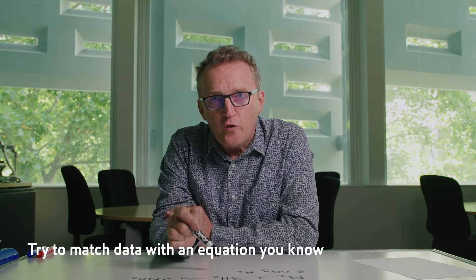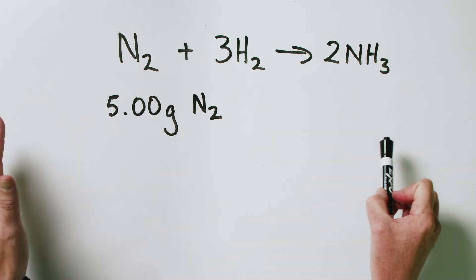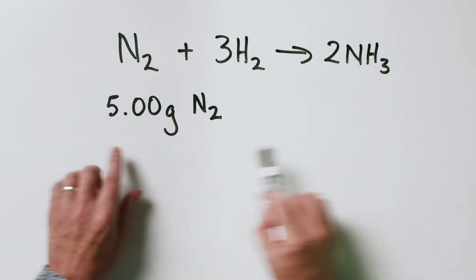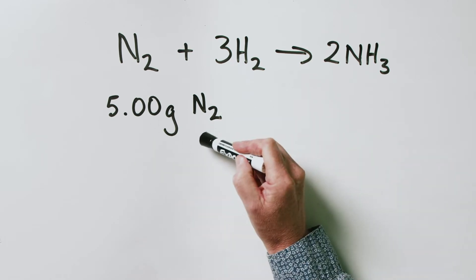Being a stoichiometry problem, there are not many possibilities for the equation we're going to use to solve this. If you're not quite sure where to begin, the best thing to do is look at the data you've been given and try to match those data to an equation that you know. Here we've been given a mass — you might think that's all the data given. But no. The other thing you've also been given is a chemical formula: 5 grams of nitrogen gas, N₂.